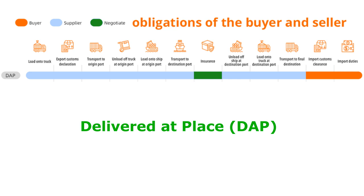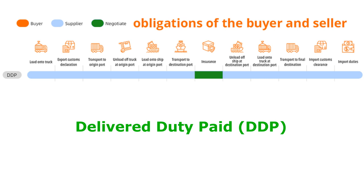The seventh one is DAP, Delivered at Place. Here, the seller is responsible for delivering the goods, ready for unloading from the arriving means of transport, at the named place. The buyer is responsible for import clearance and any applicable local taxes and import duties. The last one is DDP, Delivered Duty Paid. Here, the seller assumes all cost, responsibility, and risk until goods are delivered to the buyer. That means the seller also pays for import clearance duties, insurance, and any other related expenses.